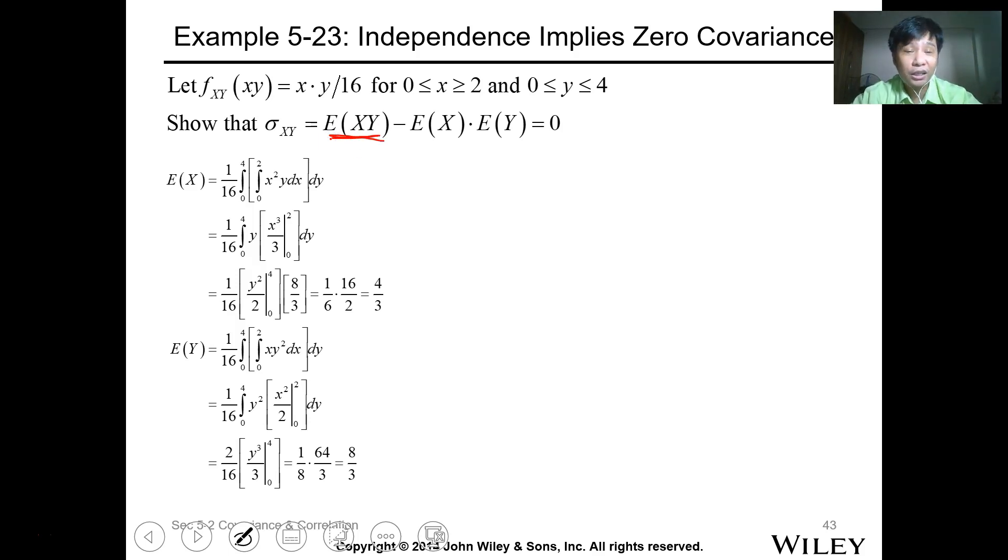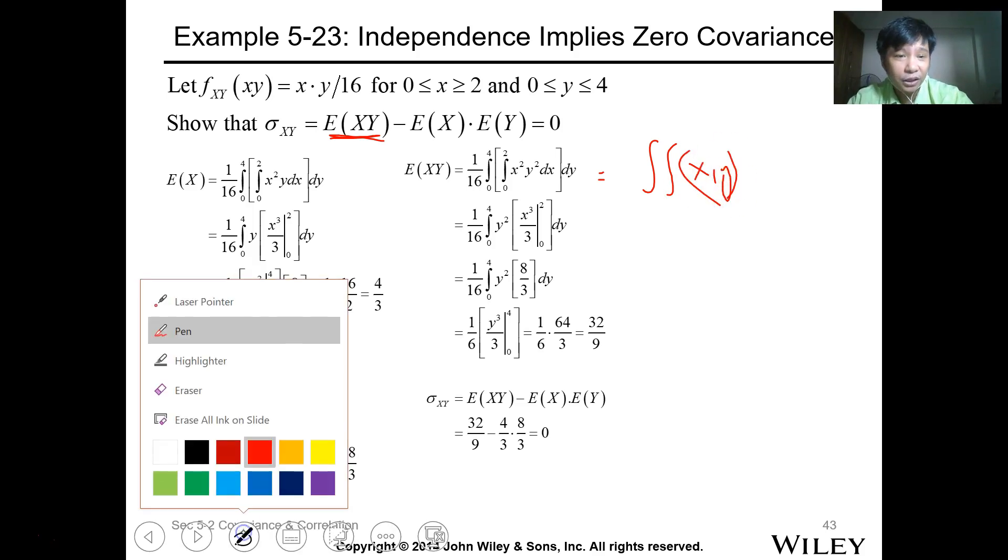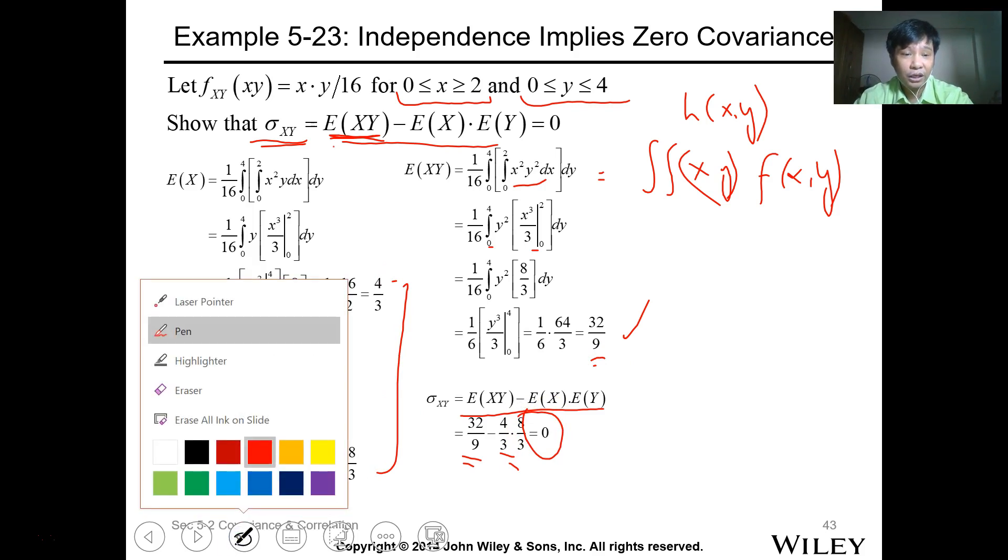Expected value of xy is the integration of xy - this is xy times your f(x,y). This is our h(x,y), x times y. So it becomes x squared y squared. By double integration, integrate over the range of values for x and y, we'll have 32/9. Get the covariance, which is sigma xy equals expected value of xy minus expected value of x times expected value of y. Get the product of these two, subtract from this, and the value that comes out is zero.